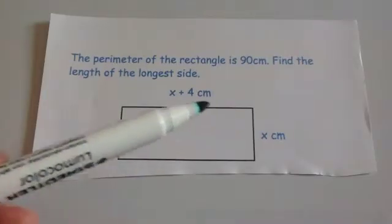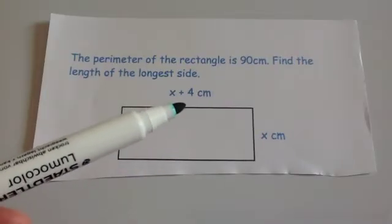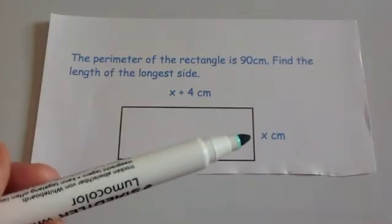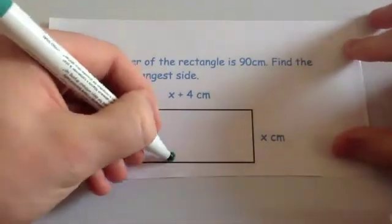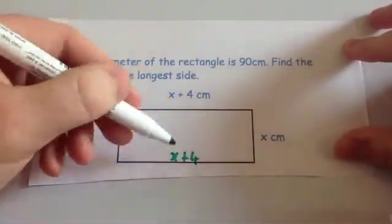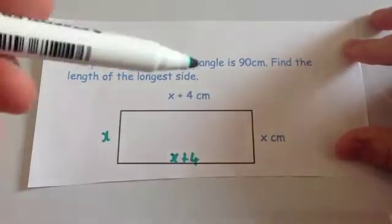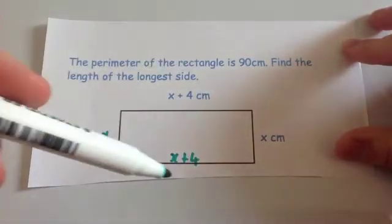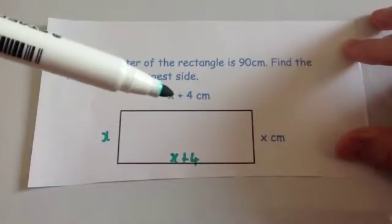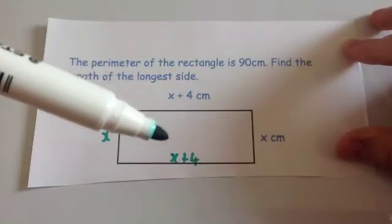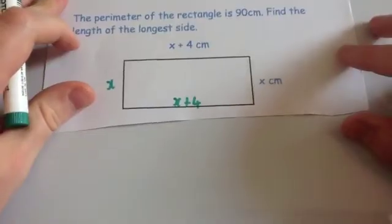The longest side is x plus 4, and the short side is x. So the opposite sides match: this side is also x plus 4 and the other is x. Since the perimeter is 90, we add all the sides together to get 90. So x plus 4, plus x, plus x plus 4, plus x equals 90.